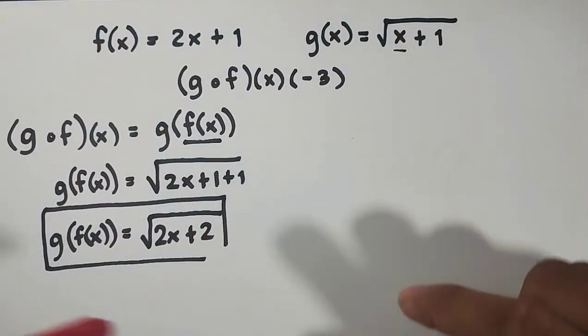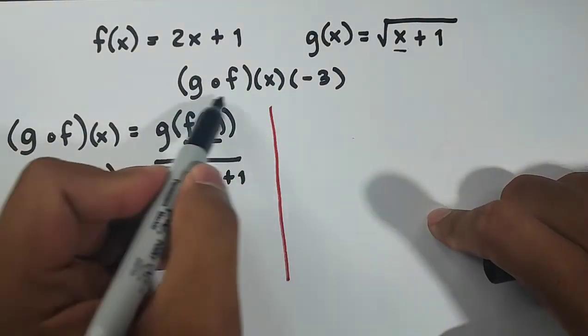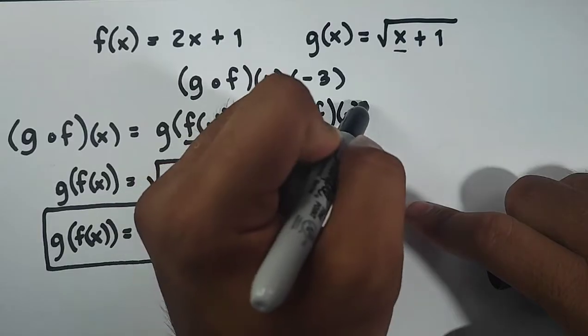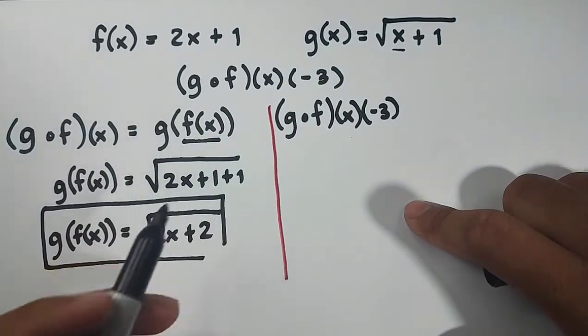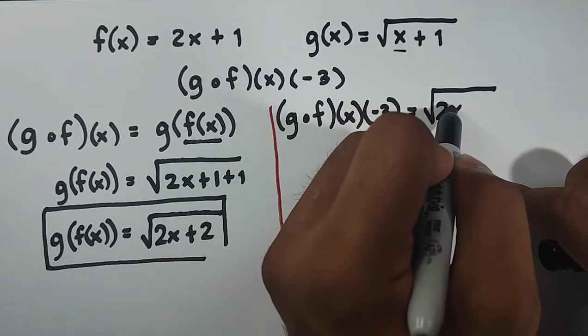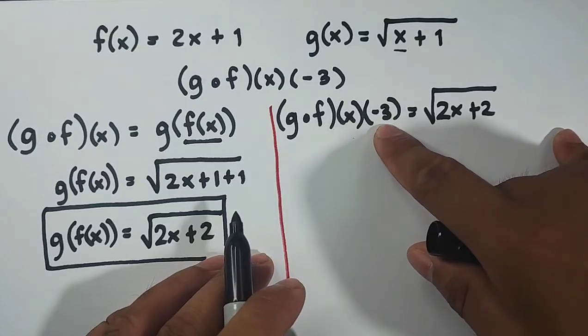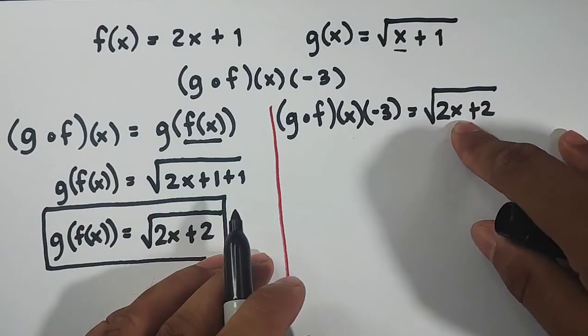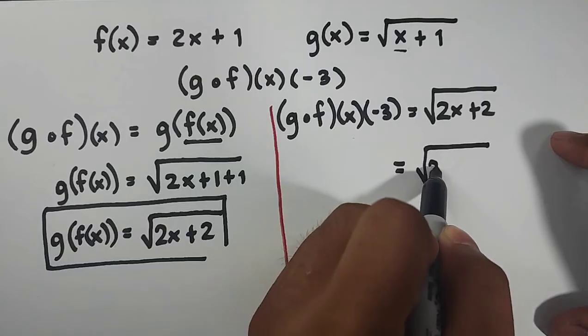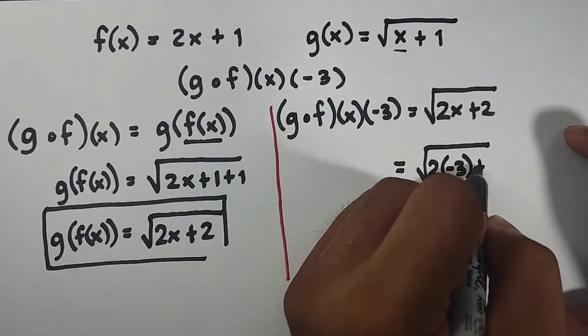Now, sir, para naman po yung negative 3? Para natin sya i-evaluate. To evaluate negative 3, what you need to do is to copy this one. g of f of x of negative 3. So what will happen here is kukopyin na natin to: square root of 2x plus 2. Dito naman, since meron tayong bagong input ditong negative 3, i-replace natin sa variable x using negative 3. So it will become the square root of 2 times, your x will be replaced by negative 3 times negative 3 plus 2.